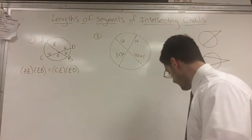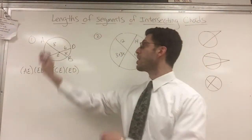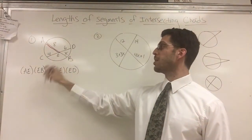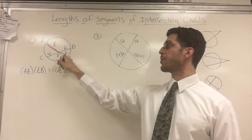If you look carefully, I'll highlight it. AE from here to here is this part of the chord, times EB is the other part of the same chord.